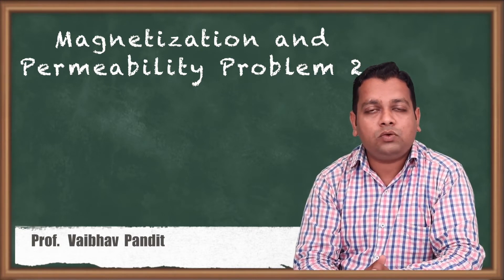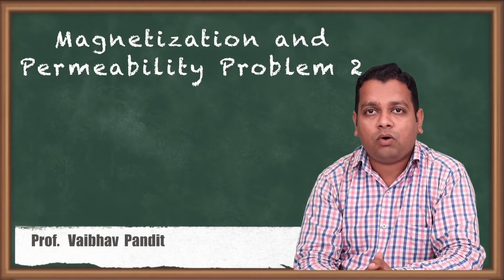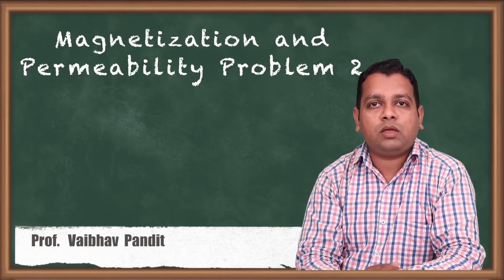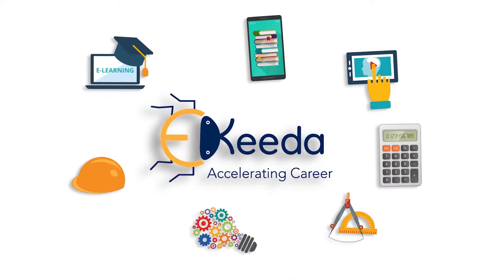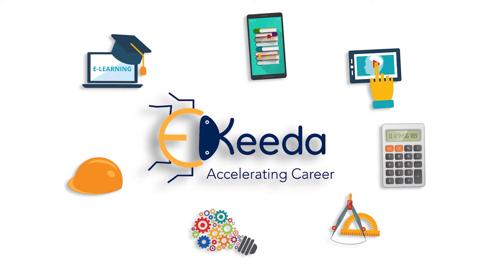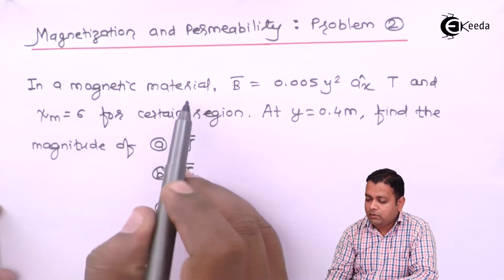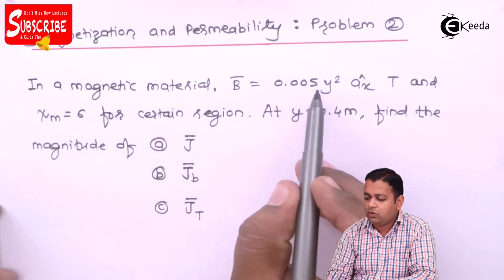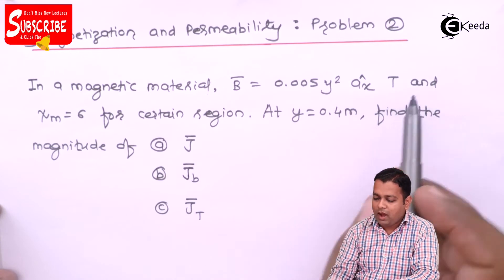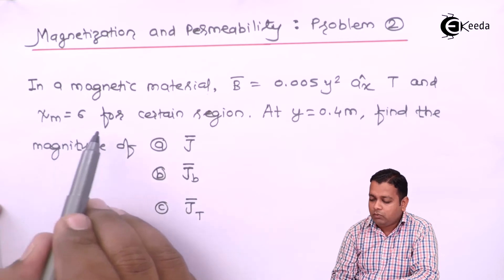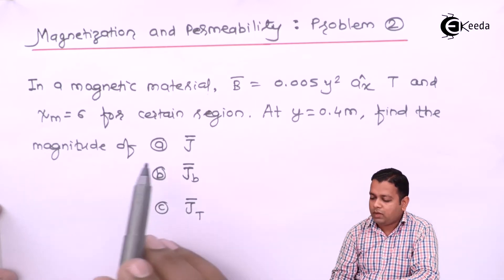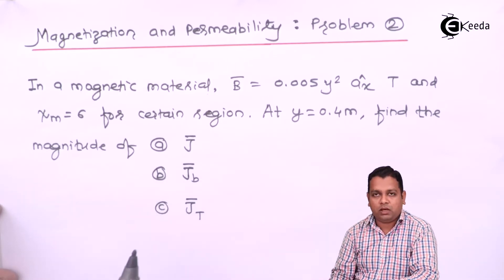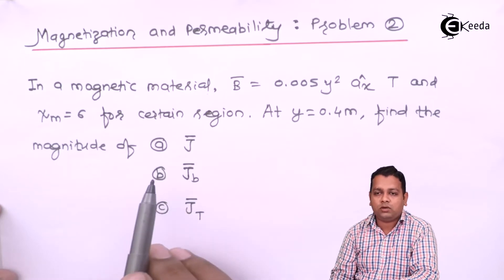Now let us take one more problem, where we are going to calculate current density configurations for bound current, the current constituted by free carriers, and the total amount of current. The problem statement is: in a magnetic material, B̄ = 0.005y² Ax̂ in Tesla, and magnetic susceptibility χm = 6 for a certain region. At y = 0.4 meters, find the magnitude of J̄, JB̄, and JT̄.